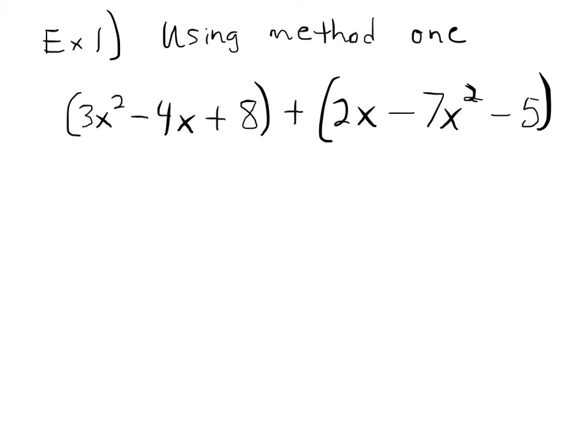Example one. I'm going to teach you using two different methods, and I honestly don't care which one you use — find the one that works best for you. It's just two different ways of organizing your work. We have parentheses around a bunch of stuff plus parentheses around three different terms. We are adding the like terms in this first expression with the like terms in the second expression. Our 3x squared can be added with our negative 7x squared, and I think it's a good idea to go through and separate these so that you don't forget signs.